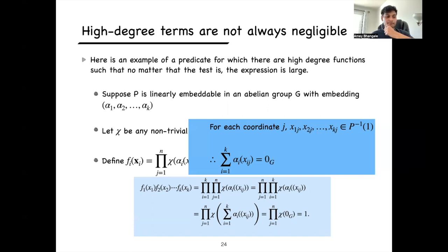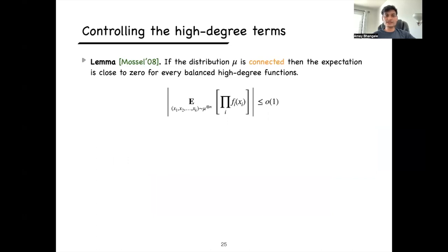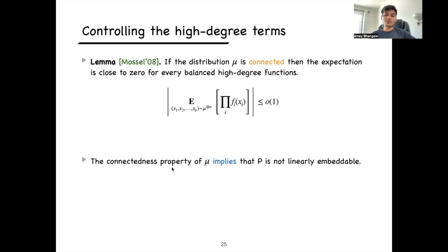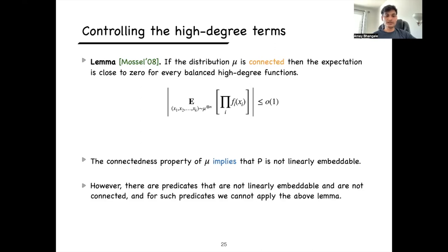This motivates isolating properties of P where this obstruction does not appear. Mossel showed that if the distribution mu is connected in a certain sense, then one can control the expected product of functions when one is high-degree. The connectedness property of mu implies P is not linearly embeddable, but the converse is not true: there are non-linearly-embeddable predicates that are not connected, and Mossel's lemma does not apply to them. This is where our contribution comes in.